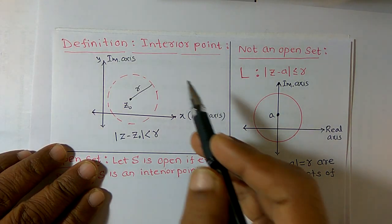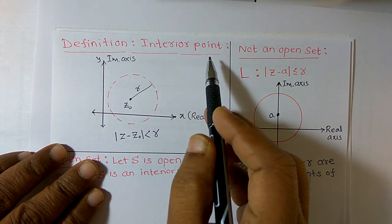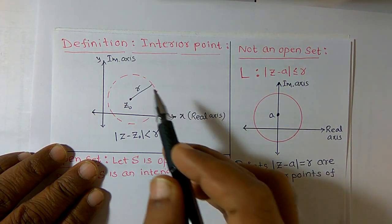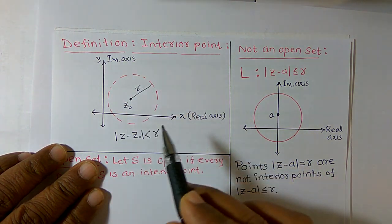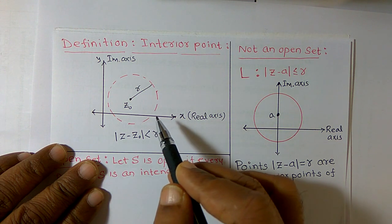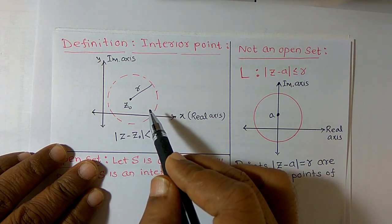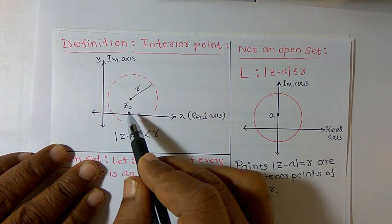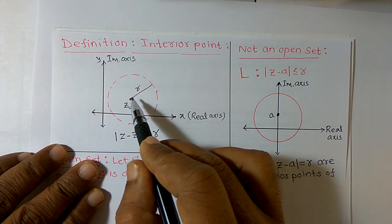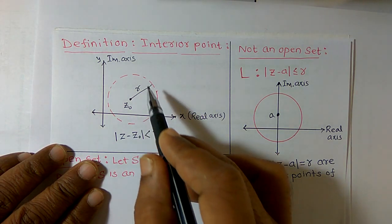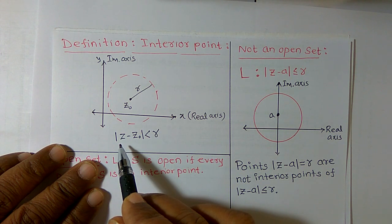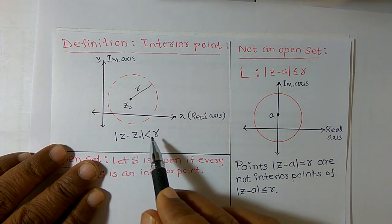Hello friends. Here I am going to introduce the term interior point. We know that an open disk is a circle containing points, namely z0 as one point, where z0 is a complex number and r is the radius. Mathematically we represent this circle using the inequality: the modulus of z minus z0 is less than r.